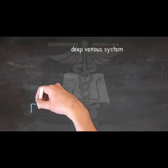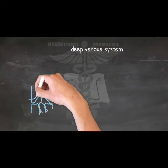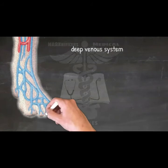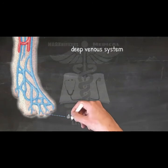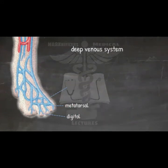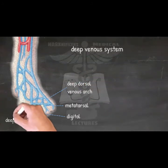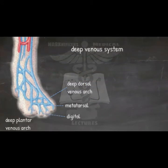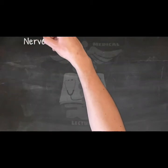The deep venous system is located deeper within the lower limb than the superficial one. In the foot, it starts with the digital and metatarsal veins that drain into the corresponding deep plantar and dorsal venous arches. These drain into larger veins that closely follow the course of the similarly named arteries. From here, the veins of the leg and thigh mirror the arteries.